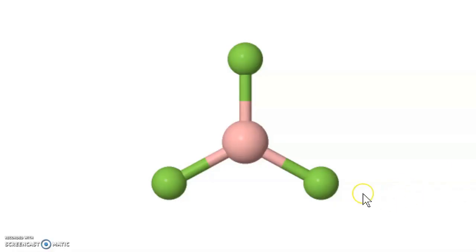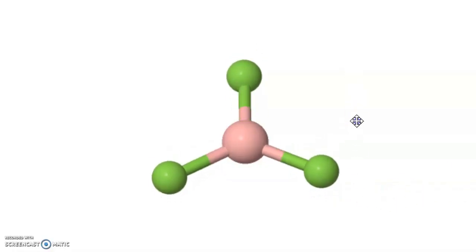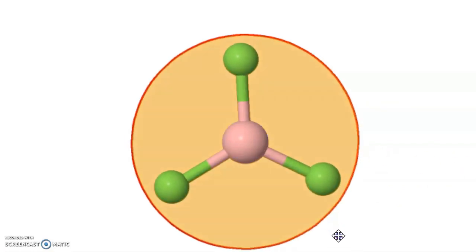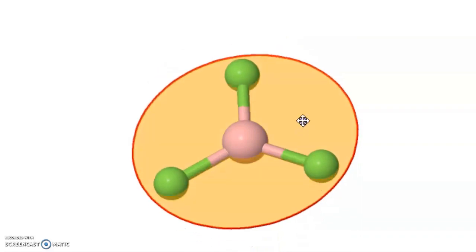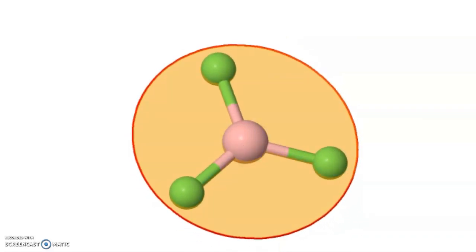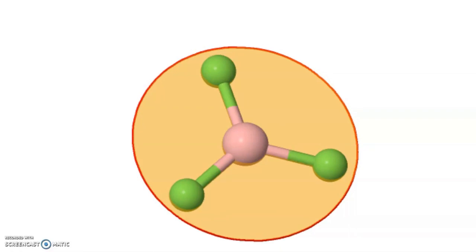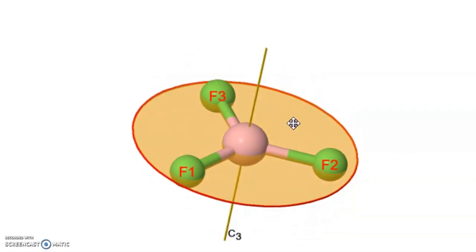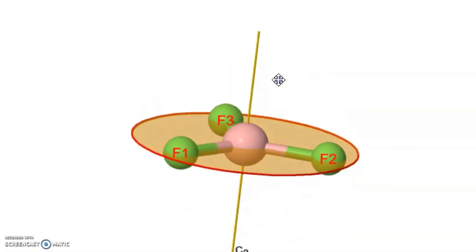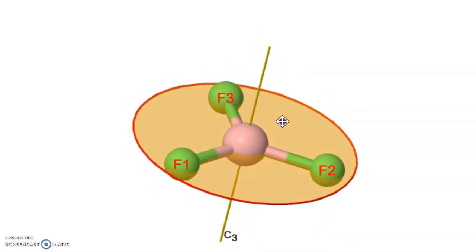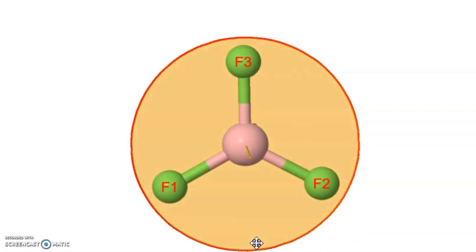For example, if I take a boron trifluoride molecule, we know that boron trifluoride is a planar molecule and each bond is separated by an angle of 120 degrees. If I label each fluorine atom as F1, F2 and F3 and start rotating the molecule in clockwise direction about an axis passing through the center of the boron atom and perpendicular to the molecular plane at an angle of 120 degrees,